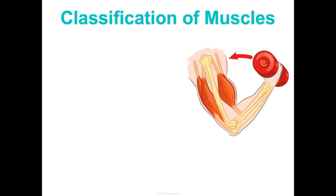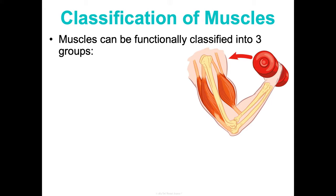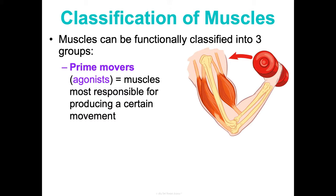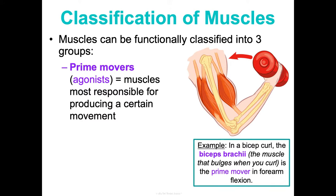We can classify muscles functionally into three groups. First are your prime movers or agonists — these are muscles most responsible for producing a certain movement. For instance, in a bicep curl, your biceps brachii is the muscle that's bulging when you curl. That's the prime mover in forearm flexion. Remember, flexion is decreasing the angle in the joint, which is what we see here.